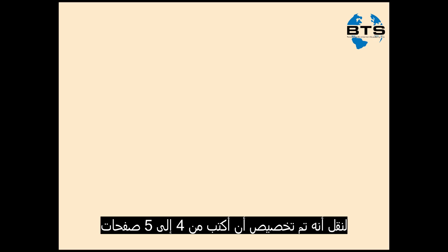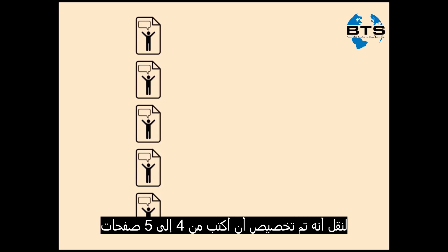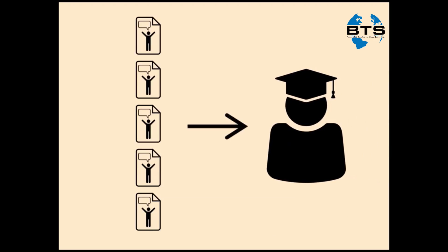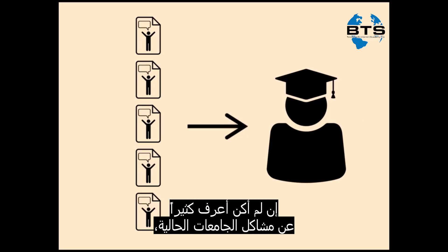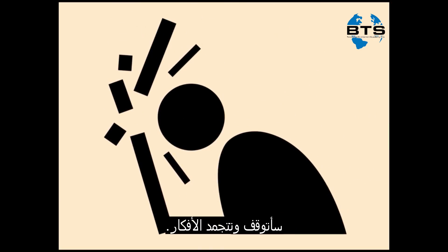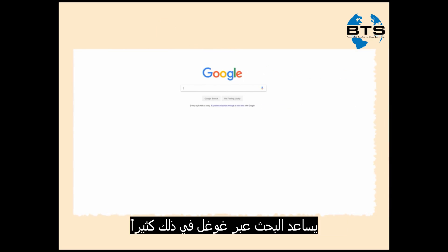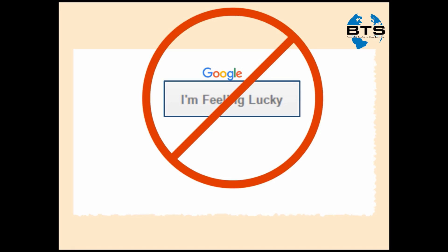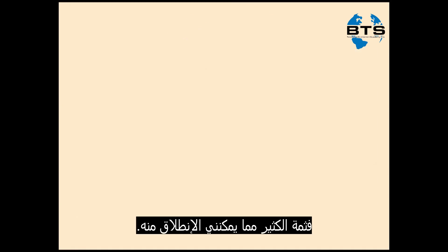Let's work through an example. Say that I'm given an assignment to write a 4-5 page argumentative paper on a current issue related to higher education. If I don't already know a lot about current issues at colleges and universities, I'll probably get stuck. Here's where background research can come in handy. General Googling probably won't help much at this point, since I don't even have an idea of what I want to write about, but there are some specific places I can go.